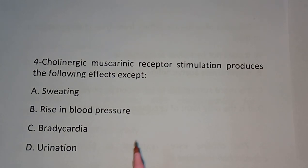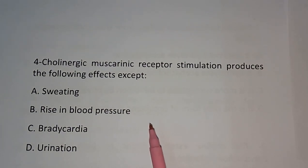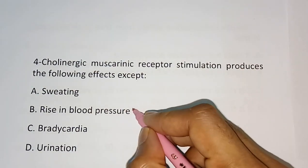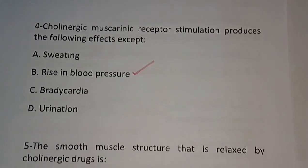Question number four: Cholinergic muscarinic receptor stimulation produces the following effect except — (A) sweating, (B) rise in blood pressure, (C) bradycardia, (D) urination. The correct answer is rise in blood pressure.